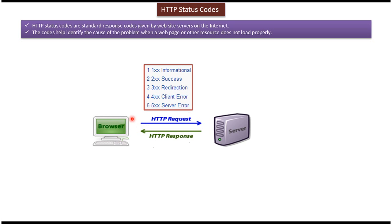Suppose a client sends an HTTP request to the server. The server receives the HTTP request, and if the server processes the request successfully, then along with the HTTP response, the server sends a 200 series success HTTP status code back to the client. It can be 200, it can be 201, etc.